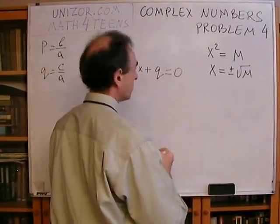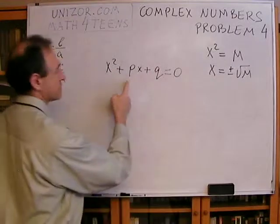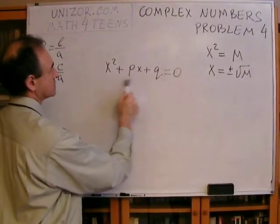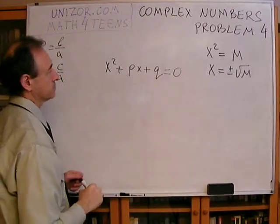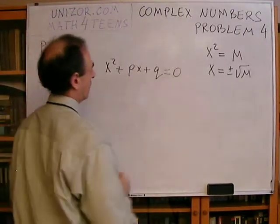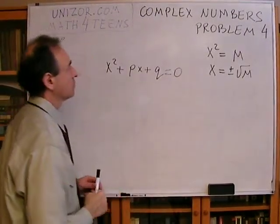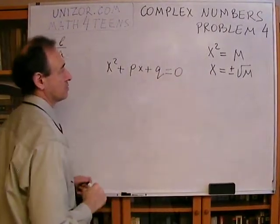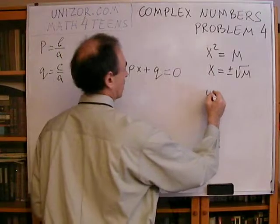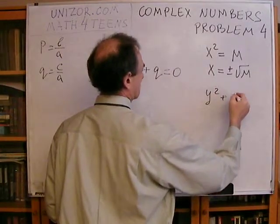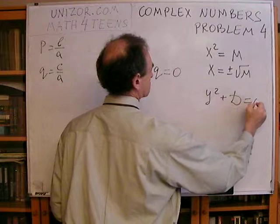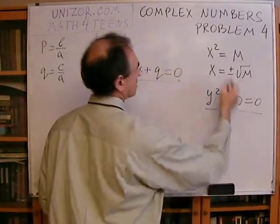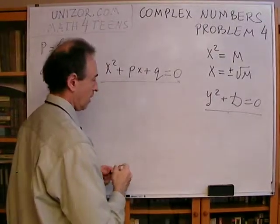A little more complicated case of this type. You see this PX, it kind of makes the whole thing a little bit more complex. But I will try to reduce it to this type of equation, of equation of type Y squared plus something like D equals to zero. So I will try to reduce this one to this one, and this I know how to solve. Now, how can I do it?